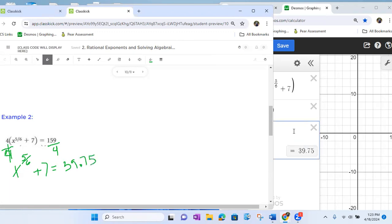Even if the calculations are easy, I like you have that Desmos out so you can verify, minimize some of those mistakes, okay? So x to the 5 sixth plus seven equals 39.75.